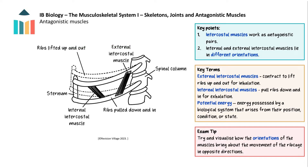Then when the internal intercostal muscles contract they pull the rib cage down and in for exhalation. Again, this movement stretches the external intercostal muscles, storing potential energy.